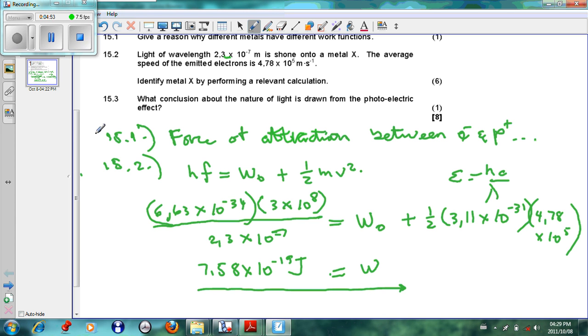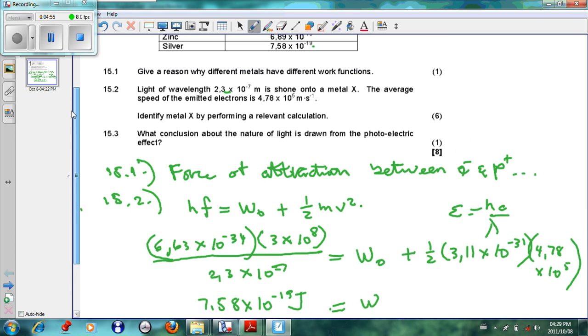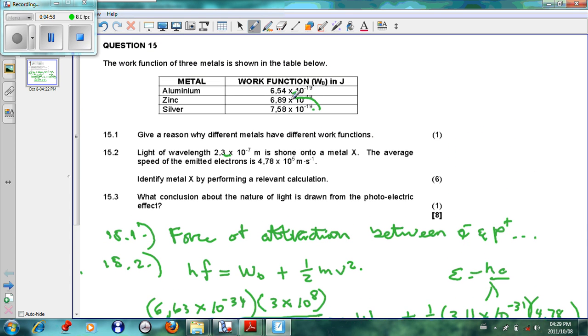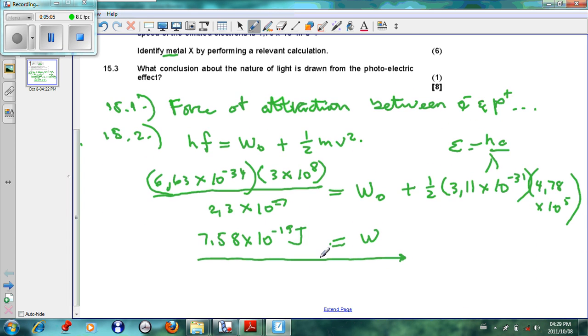This comes to 7.58 times 10 to the minus 19 joules, and this is the work function of this particular metal. We compare it to what's given here: 7.58 times 10 to the minus 19, and we say aha, it's silver. We must identify the metal because you get one mark for that, so metal x will be silver.